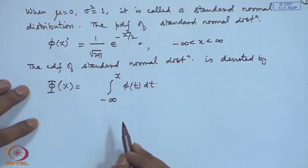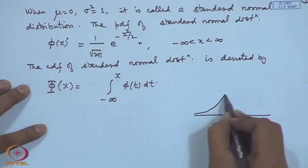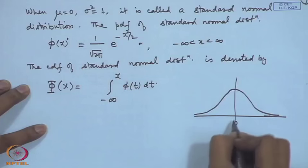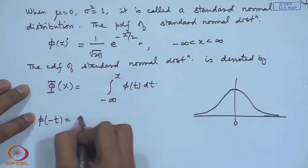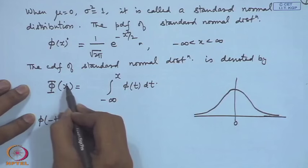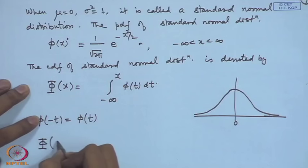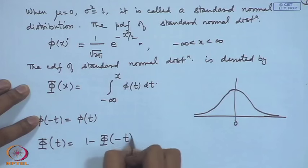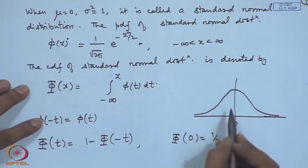Since the normal distribution is symmetric around its mean, the standard normal is symmetric around 0, so φ(t) = φ(−t). Using this property, Φ(t) = 1 − Φ(−t), and in particular Φ(0) = 1/2, confirming that 0 is the median.